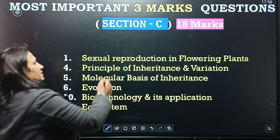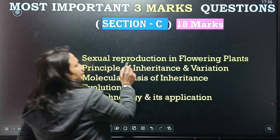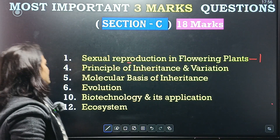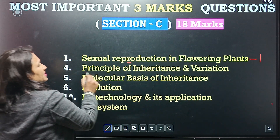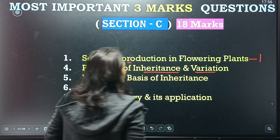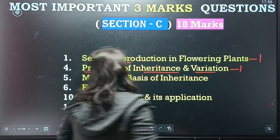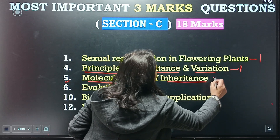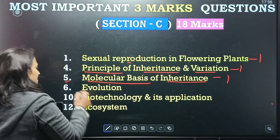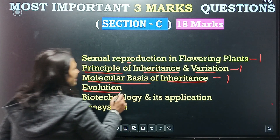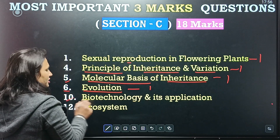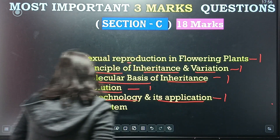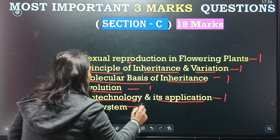The first chapter is sexual reproduction in the flowering plants — one question is coming from this chapter. Chapter four is principles of inheritance and variation — again one question. Chapter five is molecular basis of inheritance — one question. Chapter six is evolution — one question. Chapter ten is biotechnology and its applications — one question. And ecosystem — one question.